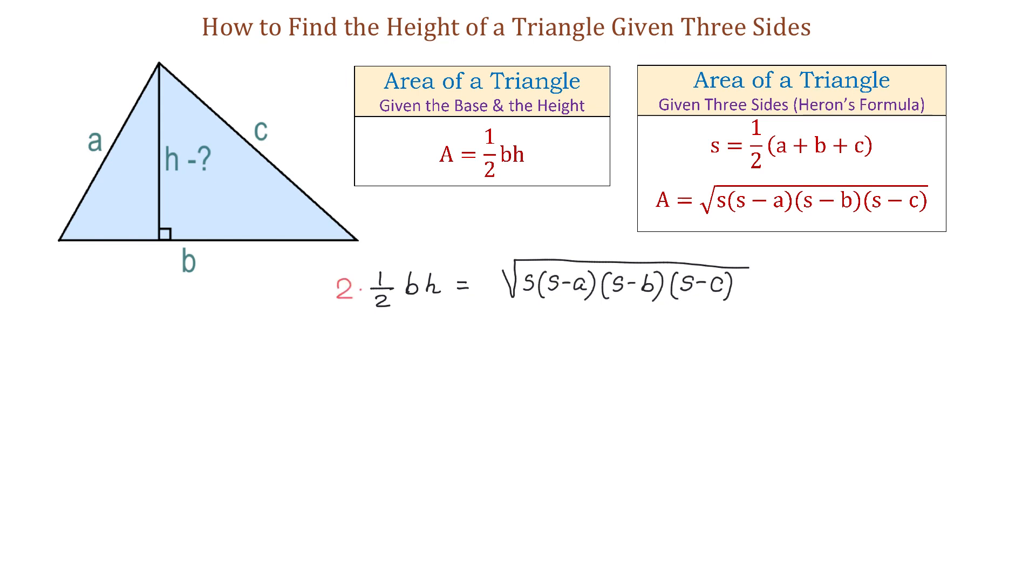Next, we will divide both sides by b, then multiply both sides by 2. On the left side, 2 and 2 will cancel, and we will have bh equals 2 times square root of s(s - a)(s - b)(s - c).